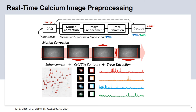I'd like to start by introducing our past work on real-time calcium image preprocessing and trace extraction. We proposed an FPGA implementation that can take calcium images from the Miniscope through the data acquisition hardware, and it can perform real-time motion correction, image enhancement, and trace extraction through customized FPGA acceleration. The traces can be extracted from either the cell contours or the tile contours by accumulating pixel values under the contour binary masks. We can perform decoding from the extracted traces or directly from the raw calcium images, and we will discuss the comparison between these two approaches later.